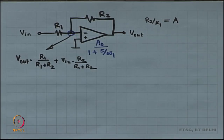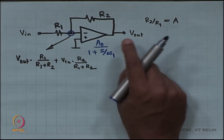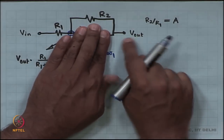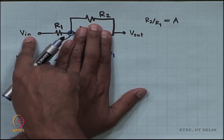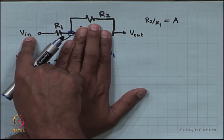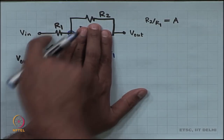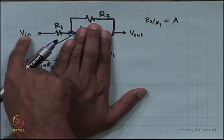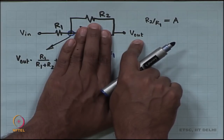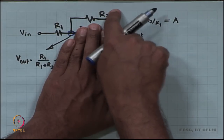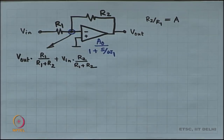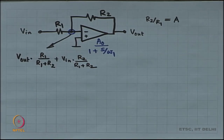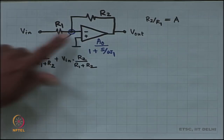I did this by inspection with the help of superposition. Forget the op-amp for a moment. First I assumed that V out is there and V in is ground, in which case it is a potential divider of value R1 by R1 plus R2. In the next case, I imagined that V in is there and V out is ground, in which case it is a potential divider again with R2 by R1 plus R2. So it is V out times R1 by R1 plus R2, plus V in times R2 by R1 plus R2. That is the voltage at the inverting input.